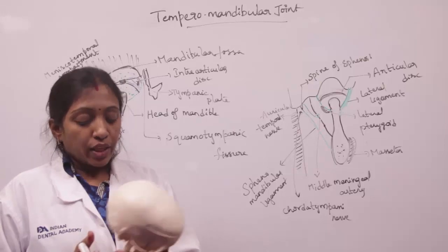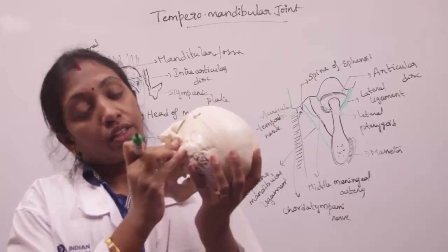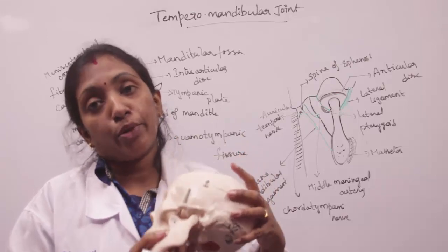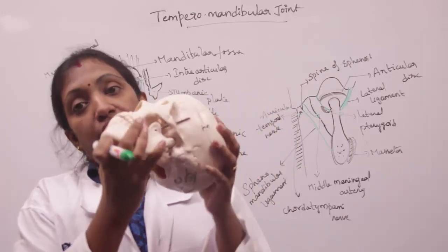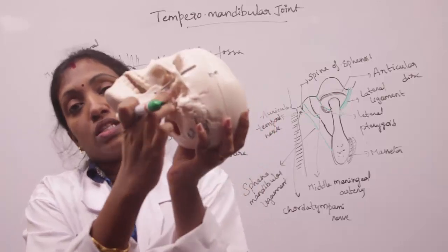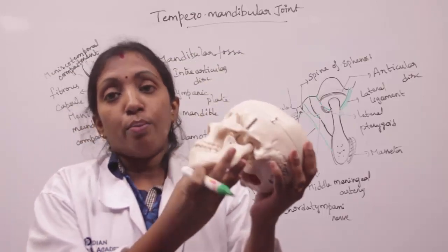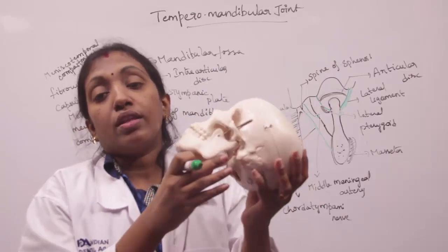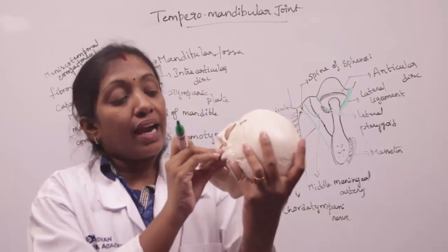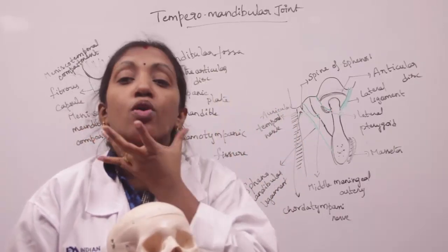The temporomandibular joint is where the head of the mandible articulates with the mandibular fossa of the temporal bone by a pair of condylar joints called temporomandibular joints. These are responsible for bicondylar articulation.